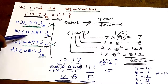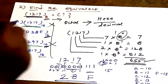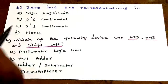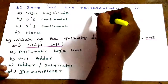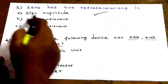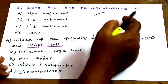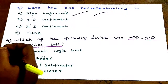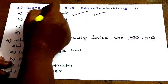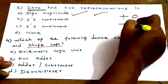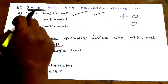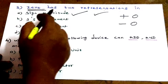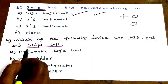The answer is 0028F, so option B is the correct answer. Next question — very very important and a repeated question: zero has 2 representations in signed number systems. Option A is the correct answer.